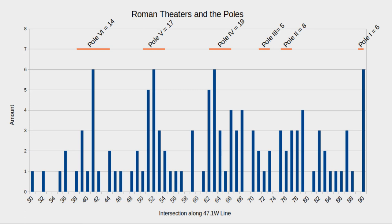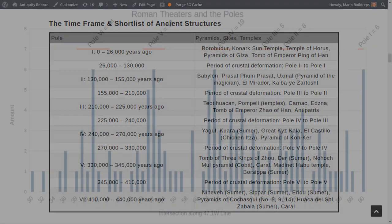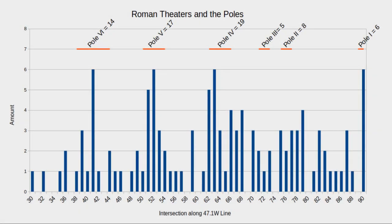Why is it interesting? Because these are two different, absolutely unrelated patterns. Why are they unrelated? Because we say that these poles one to six stretch over a period of about 450,000 years — pole six is almost 450,000 years old, and pole five is around 350,000 years old. So structures which are in large amounts oriented to pole five, for example, the probability that they are as old as the pole increases, because these peaks are focusing around the poles we have found. History books tell us that Roman amphitheaters are not more than 2,000 to 2,500 years old — but you get the idea.